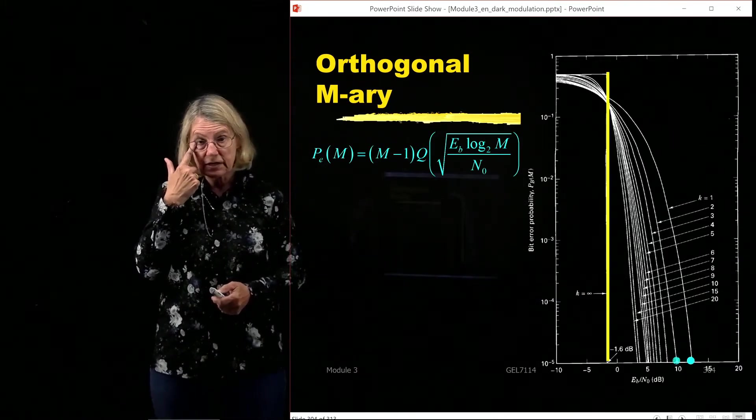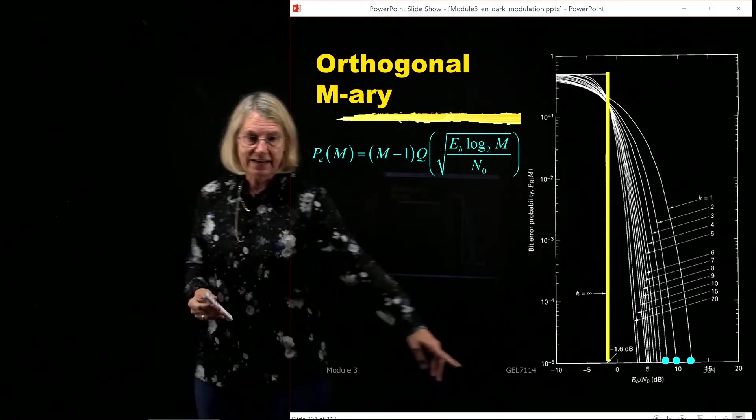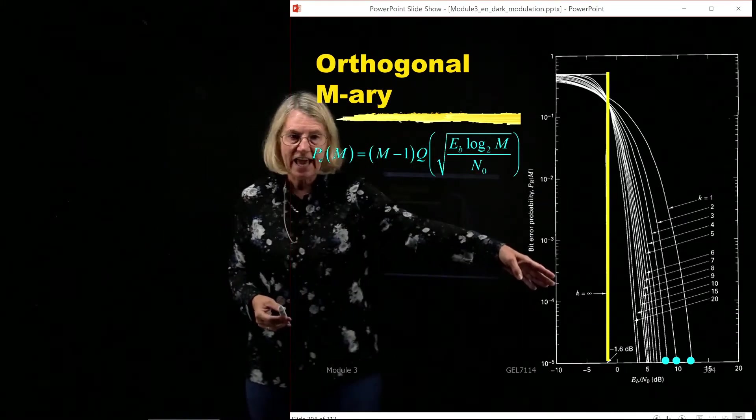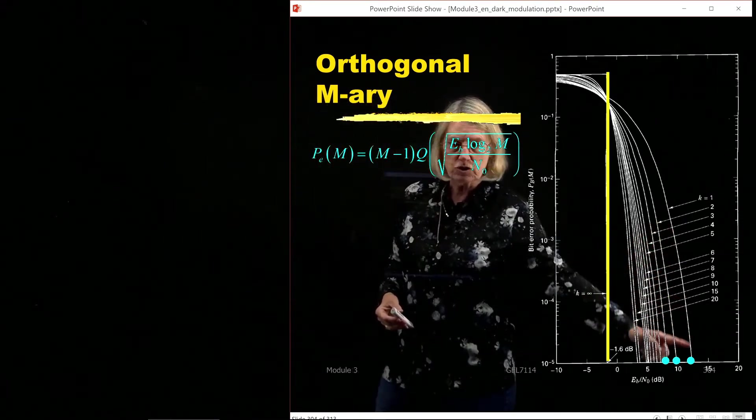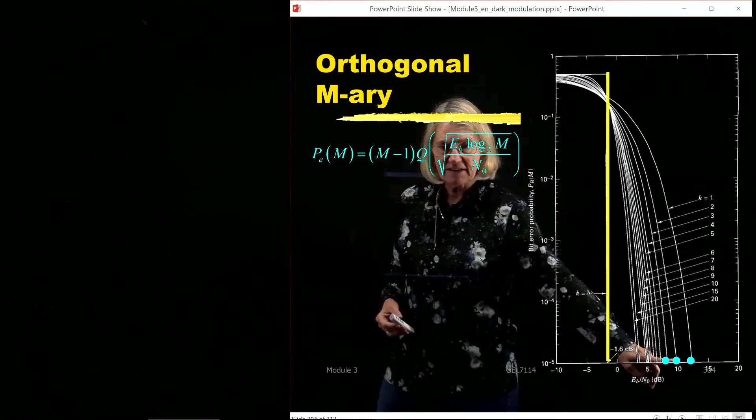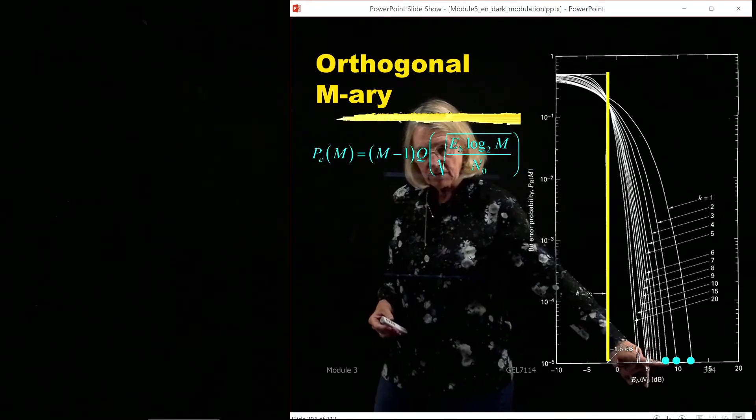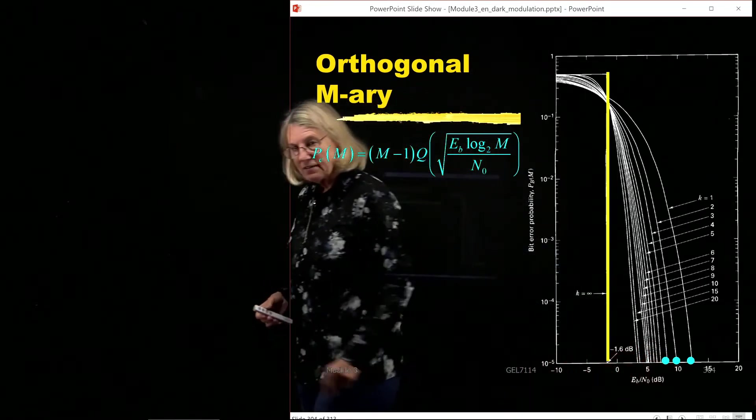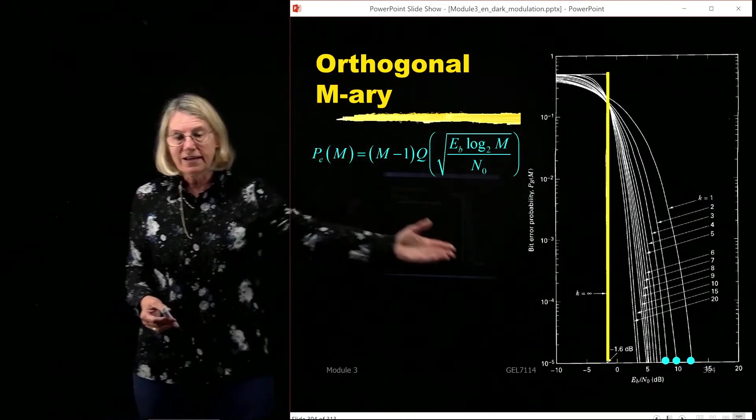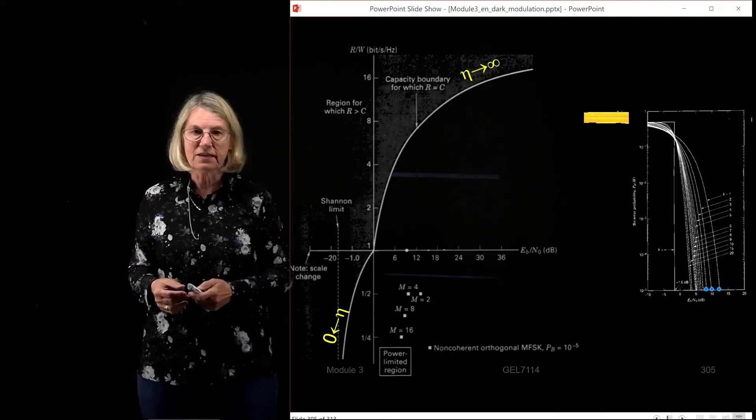Now suppose I set a certain level of performance that I'm interested in, and down here it's 10 to the minus 5. So I look at the curves for different k and I say oh k equals 2, that's this Eb over N0 that's necessary to achieve 10 to the minus 5. Here for k equals 2, m equals 4, there's another Eb over N0. And you can see that to attain 10 to the minus 5 I need less and less Eb over N0, and I can take these numbers and use these to plot them on the spectral efficiency plane.